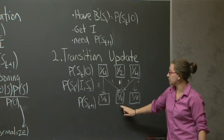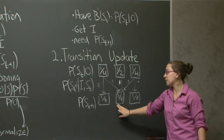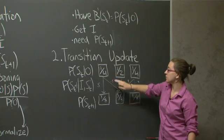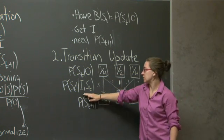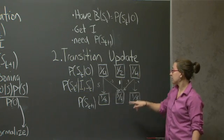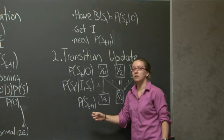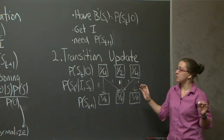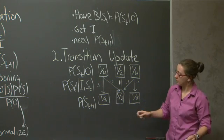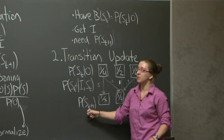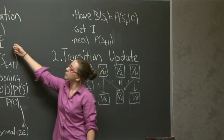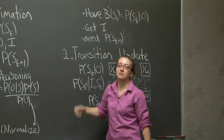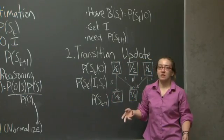When you run the transition update, you accumulate all the probabilities associated with being in a particular new state as a consequence of being in a particular previous state and entering that new state based on the transition distribution. Once you accumulate all these values, you end up with your new distribution over the new state. This represents one step of state estimation. If I wanted to run multiple steps, I would take the value for s(t+1), replace it as s(t), and run the same process of Bayesian reasoning and transition update again. This concludes my review of state estimation. Next time we'll talk about search.